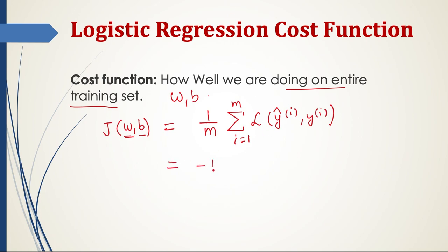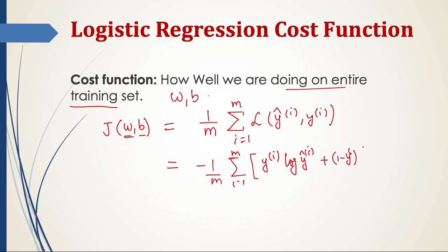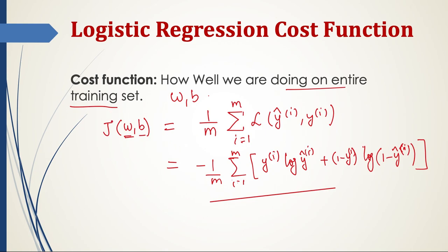Expanding the loss function, the cost function J is: (1/m) times the sum from i=1 to m of [ minus y_i log(y-hat_i) minus (1 minus y_i) log(1 minus y-hat_i) ]. Our job is to find parameters w and b that minimize J. So we saw how to define the loss function and cost function for logistic regression. In a way, logistic regression can be thought of as a mini neural network, though not a deep one — we will see more about neural networks in future lessons.